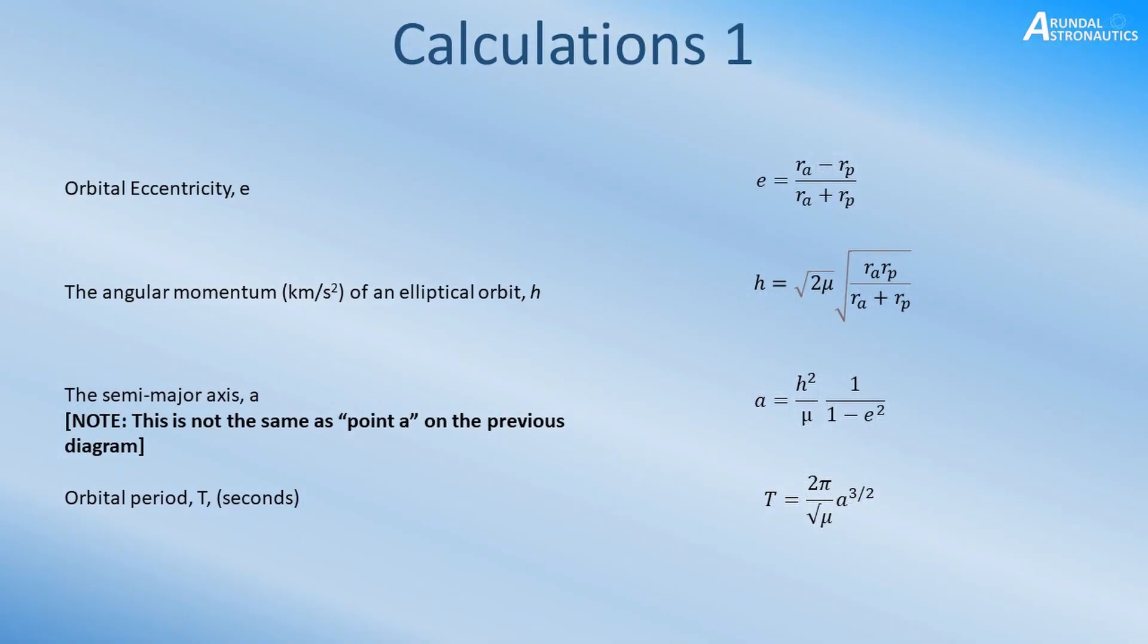The first set of calculations is for the base orbital parameters that you'll need to conduct the rest of the algorithm, and that is the orbital eccentricity, the angular momentum of the orbit, the semi-major axis defined as A (not to be confused with point A which is used throughout the diagrams), and the orbital period. As the next few slides are quite mathematical, I will be cutting back on the narration somewhat and will again invite you to pause between the slides so that you can take the time to read the content.